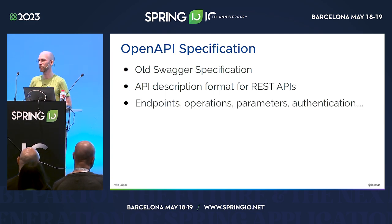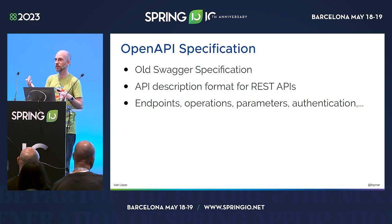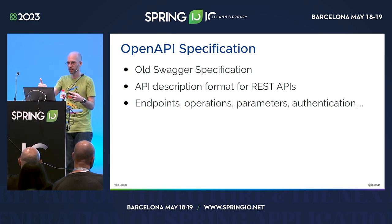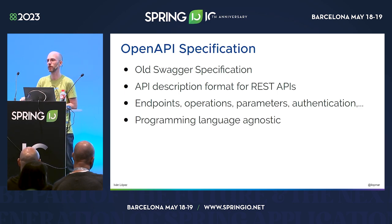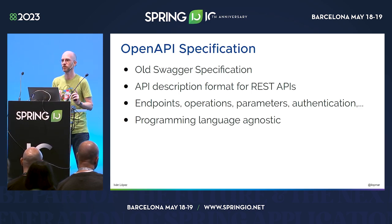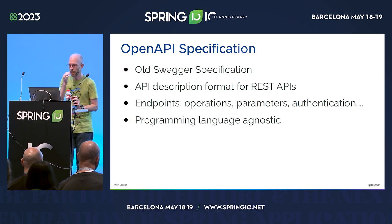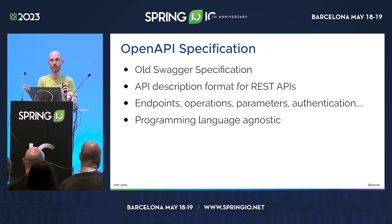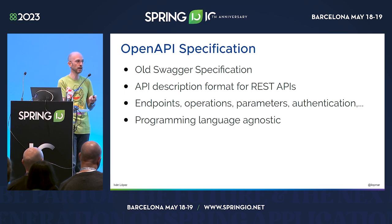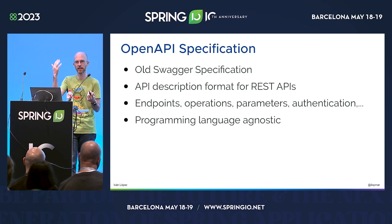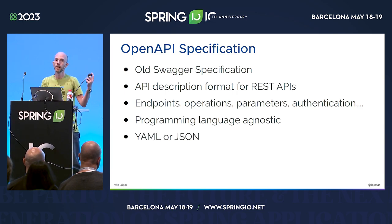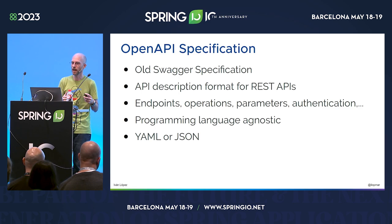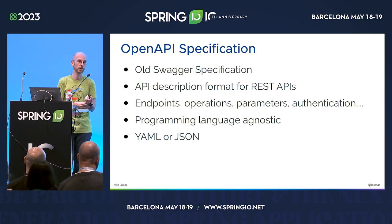With an OpenAPI, we can define endpoints, operations, methods, parameters, the request, the responses, the authentication — everything related to the API we are exposing. One of the most important things about the OpenAPI specification is that it's programming language agnostic — it's not tied to any programming language. That's one of the main advantages, because you can do a lot of things for different languages. With OpenAPI, you can discover how the API works just by taking a look at it — it's readable. There are two formats to write OpenAPIs: YAML or JSON, but pretty much everyone uses YAML.